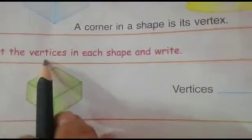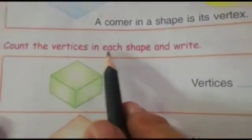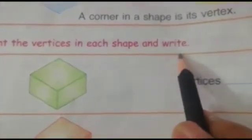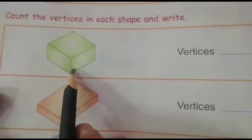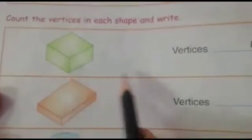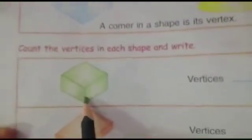Now count the vertices in each shape and write. Tell me which shape is this. You can identify which shape is this. Cube, this is cube and vertices are 8. Count it now.